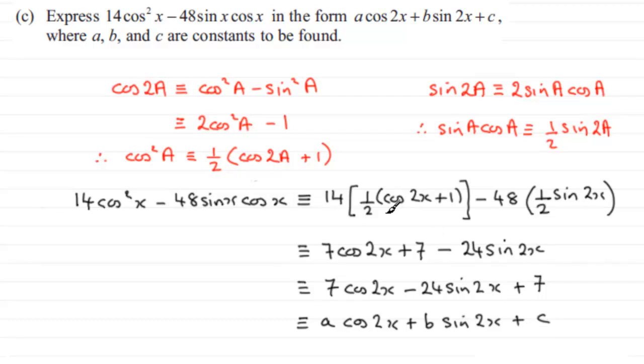And we had to state the values of a, b and c, constants to be found. So in that case we could say where a equals 7, b is going to be minus 24 and the constant c is going to be 7. Alright, so I hope it's given you an idea on that part of the question.